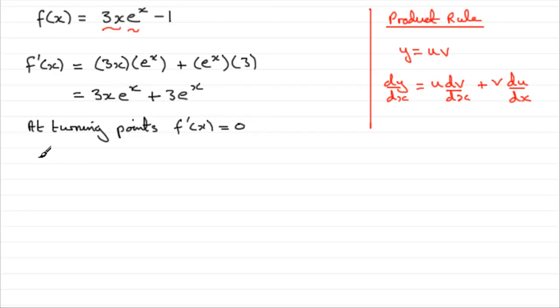So what's that going to mean? Well, therefore, our equation here, 3x e to the power x plus 3 e to the power x, is going to equal 0.